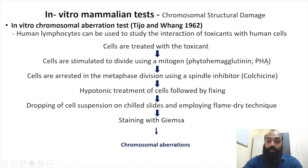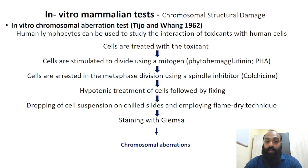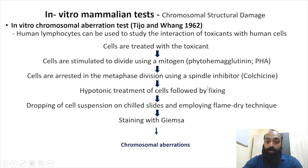We stimulate it to divide and then arrest the chromosomes at the stage of metaphase, because we don't want it to further undergo anaphase and telophase — then we would not be able to see the chromosomes very clearly. So we use a spindle inhibitor called colchicine, where we arrest the cell division cycle at metaphase. We do not allow the spindle apparatus to form and therefore the cells do not undergo further cell division.